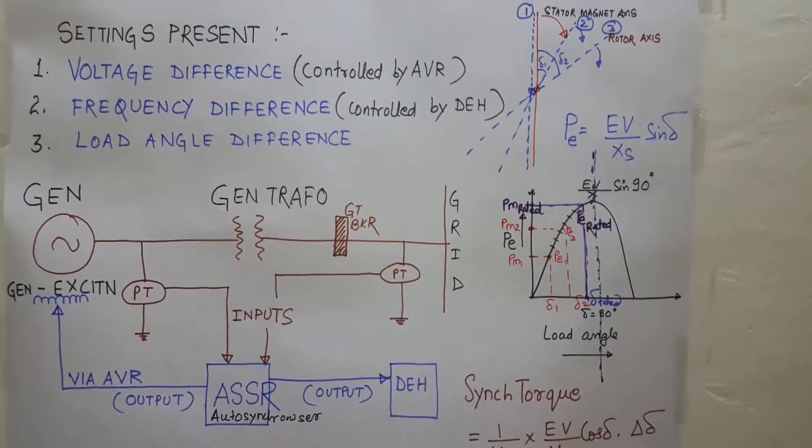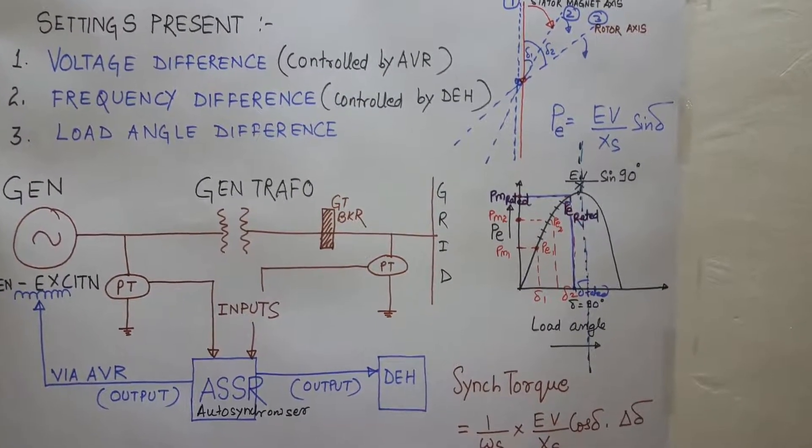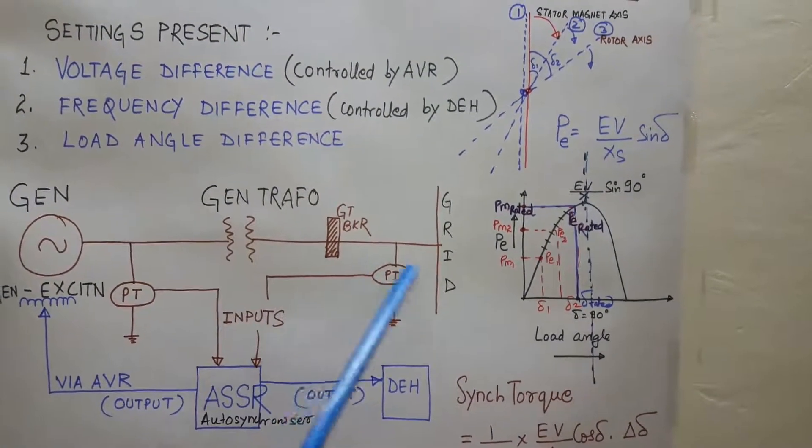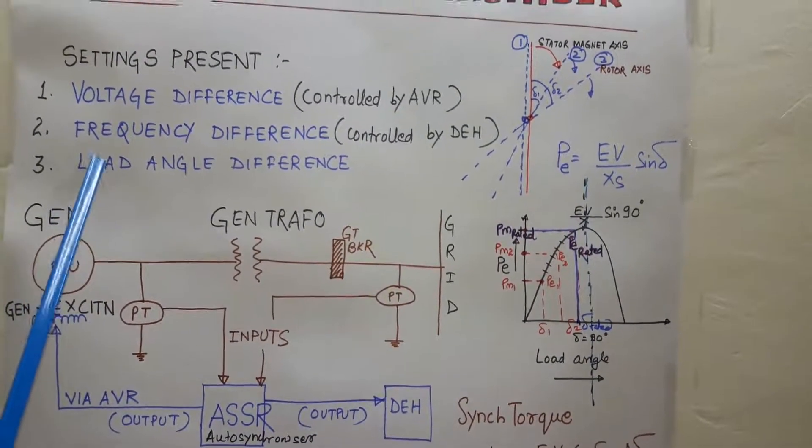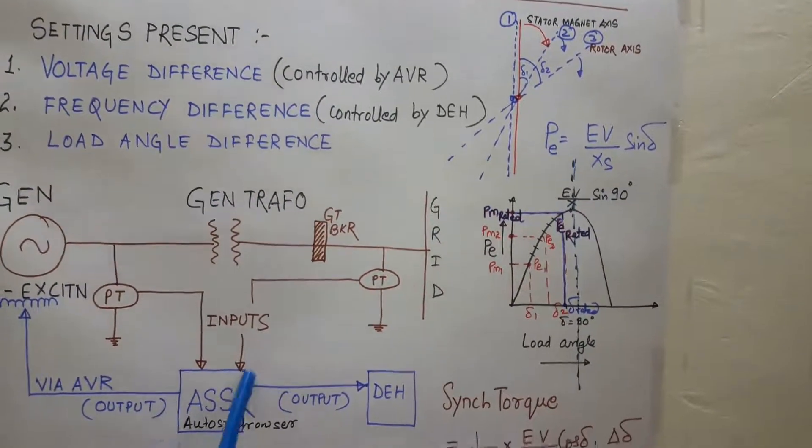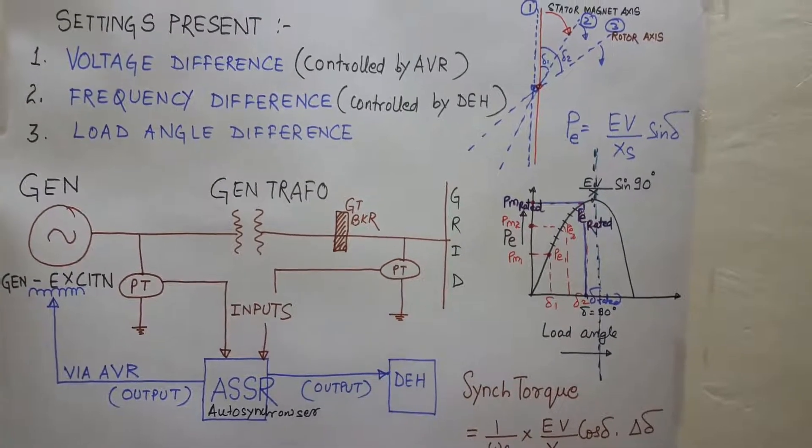By controlling the speed of the rotor, the frequency of the generated voltage can be controlled and can be brought equal with the grid voltage. Similarly, for making the load angle difference within the allowable limit, the auto synchronizer will send a signal to the DEH of the turbine for controlling the speed.